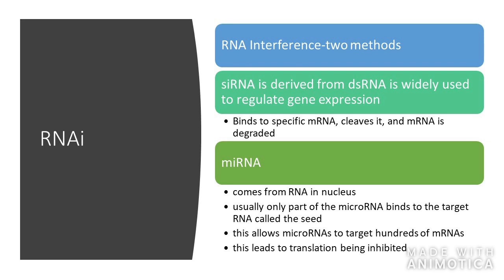In RNA interference, or RNAi, there are two methods. Both of them — the siRNA and the microRNA — are cleaved by an enzyme called Dicer, and they bind to an RNA-induced silencing complex known as RISC.